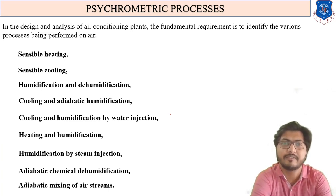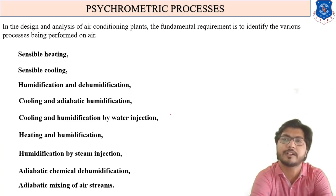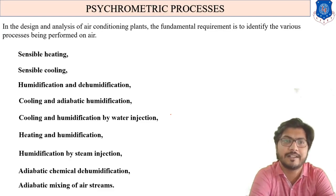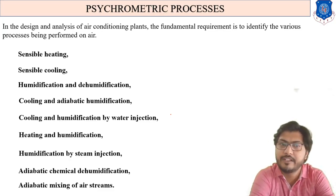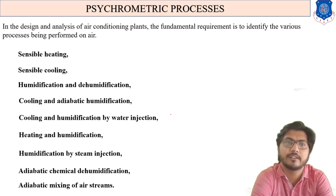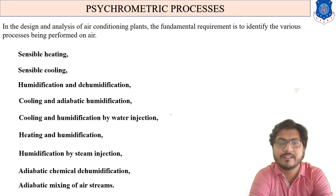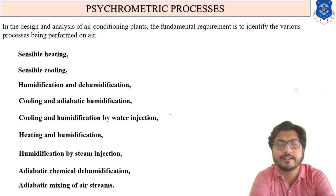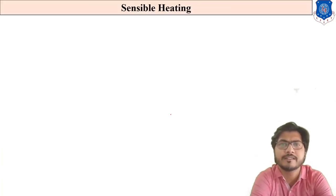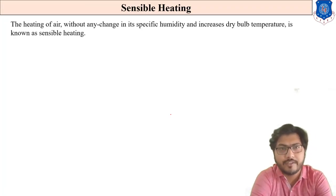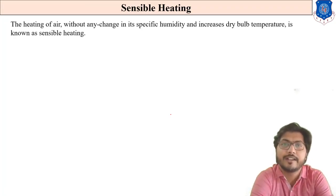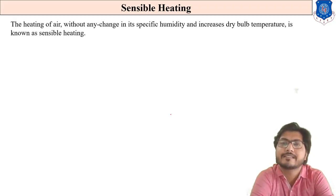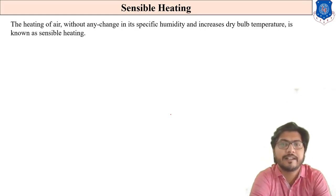According to these processes, we adopt one process for our required condition — like sensible heating, sensible cooling, humidification, dehumidification, heating and humidification, heating and dehumidification, etc. — for our air conditioning system. First, we discuss sensible heating. Sensible heating is nothing but heating of air without any change of its specific humidity; the increased dry bulb temperature is known as sensible heating.